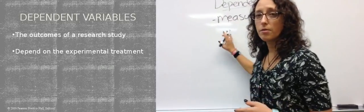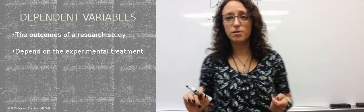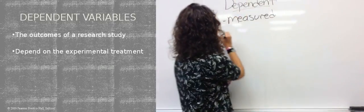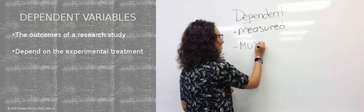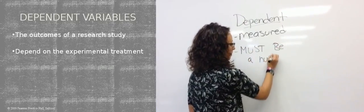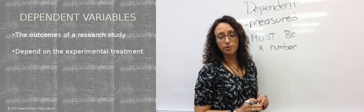Now the very important thing to remember about dependent variables is that they have to be a number. You're measuring something, you're measuring the outcome. It has to be a number.